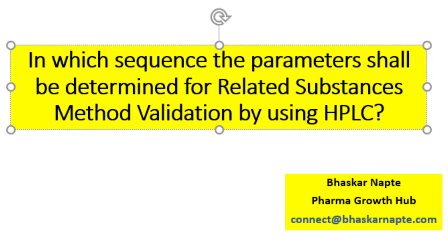We know that analytical method validation plays a very important role at all stages of the pharmaceutical product life cycle. ICH and other regulators have provided guidance on the list of parameters to be studied during validation, but there is no guidance available on which sequence the parameters have to be studied — whether to perform specificity first and then go for precision. That clarity is not available in any of the guidelines.